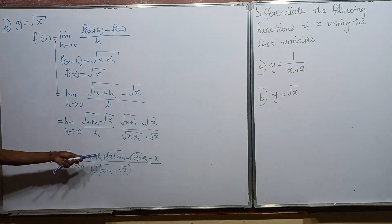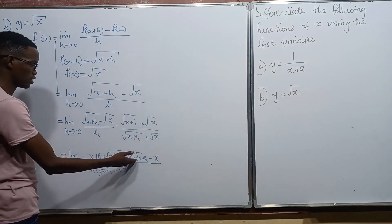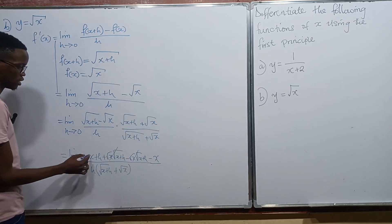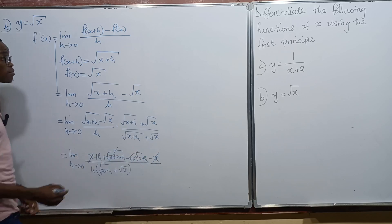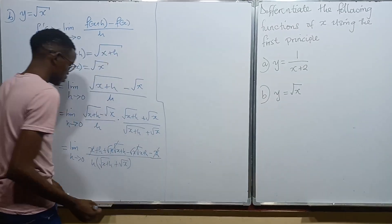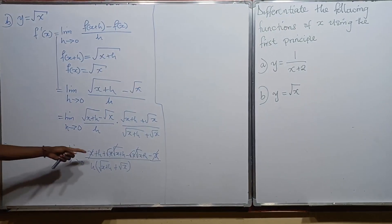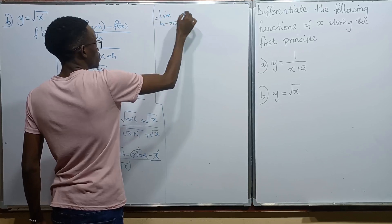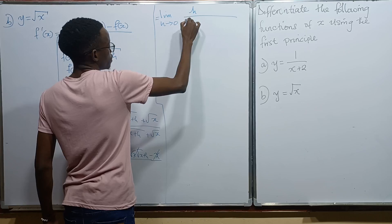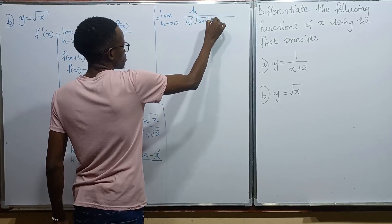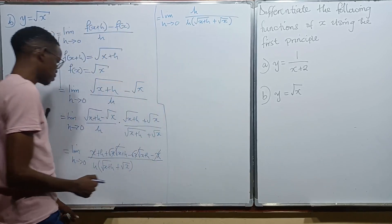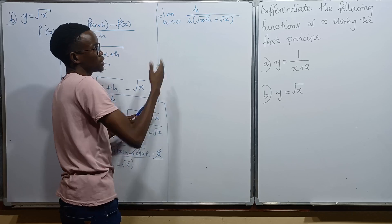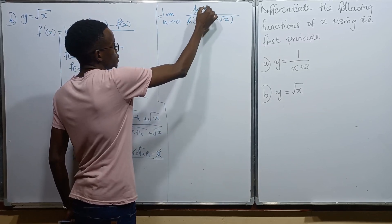Looking at the numerator: the two middle terms cancel each other, and positive x and negative x cancel. We remain with just h on top. So we have the limit as h approaches 0 of h divided by h times (root of x plus h plus root of x). The h on top and the h on the bottom cancel, leaving 1.